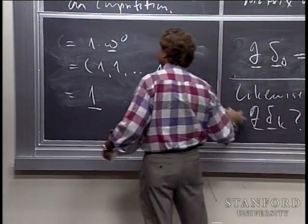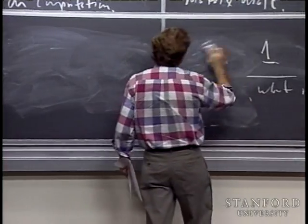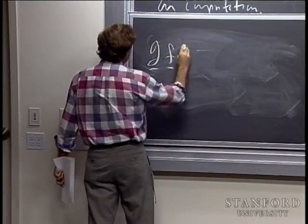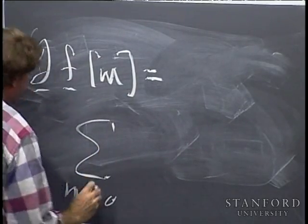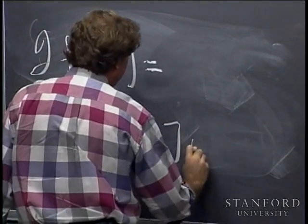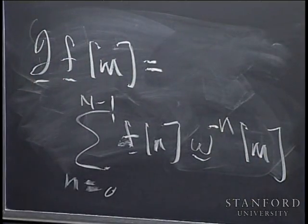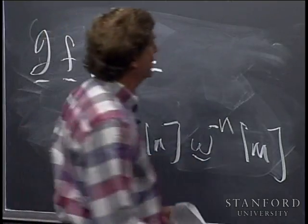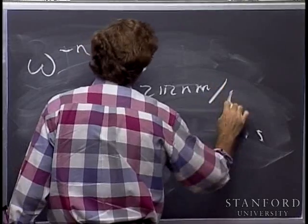Let me just write down the definition and look at it a little bit differently. The m-th component of the Fourier transform of F is the sum from n equals 0 to N minus 1 of the input times omega to the minus n, its m-th component. I can write this in terms of ordinary exponentials — omega to the minus nm, the m-th component of that, is e to the minus 2 pi i nm over N.